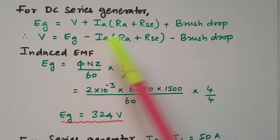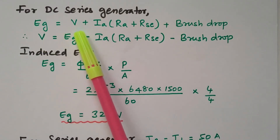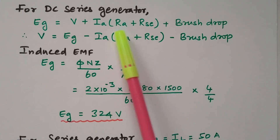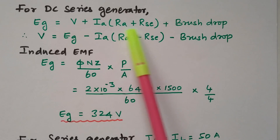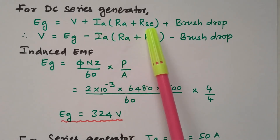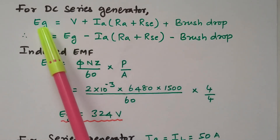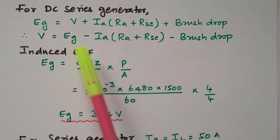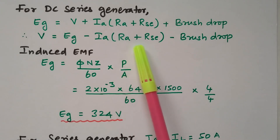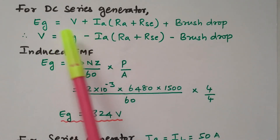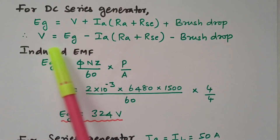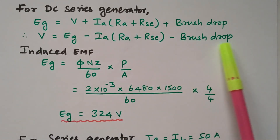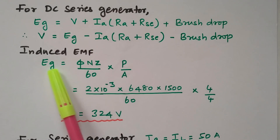For a series generator, generated EMF equals terminal voltage plus armature resistance drop plus series field resistance drop plus brush drop: EG = V + Ia(RA + RSC) + brush drop. So terminal voltage V = EG − Ia(RA + RSC) − brush drop. All values are available except EG, so we need to find the generated EMF EG using another formula.